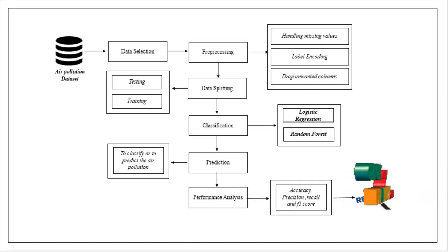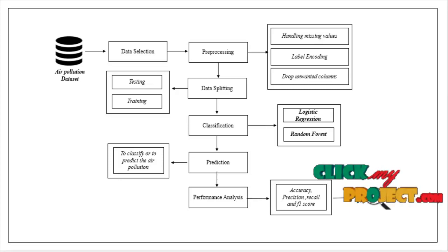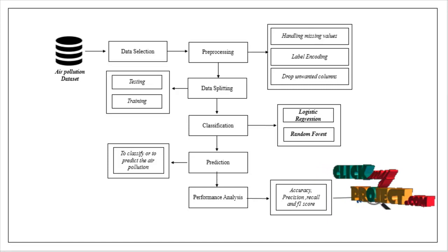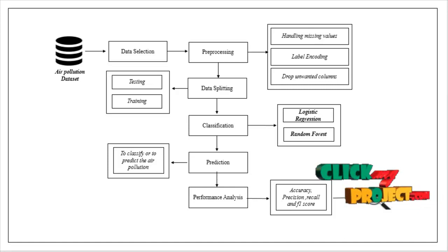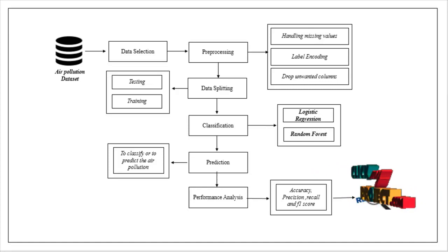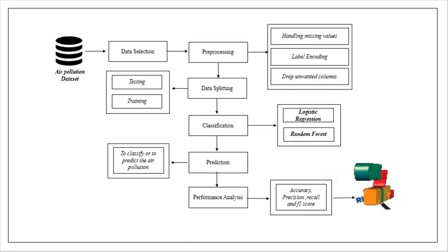Then label encoding. Label encoding means we have to encode the data into some labels — that is, convert string values into numeric integer values for machine readability. Then we have to drop unwanted columns. Our dataset contains a number of columns or attributes, and if any columns are unnecessary and not used in our process, we have to drop those unnecessary columns.